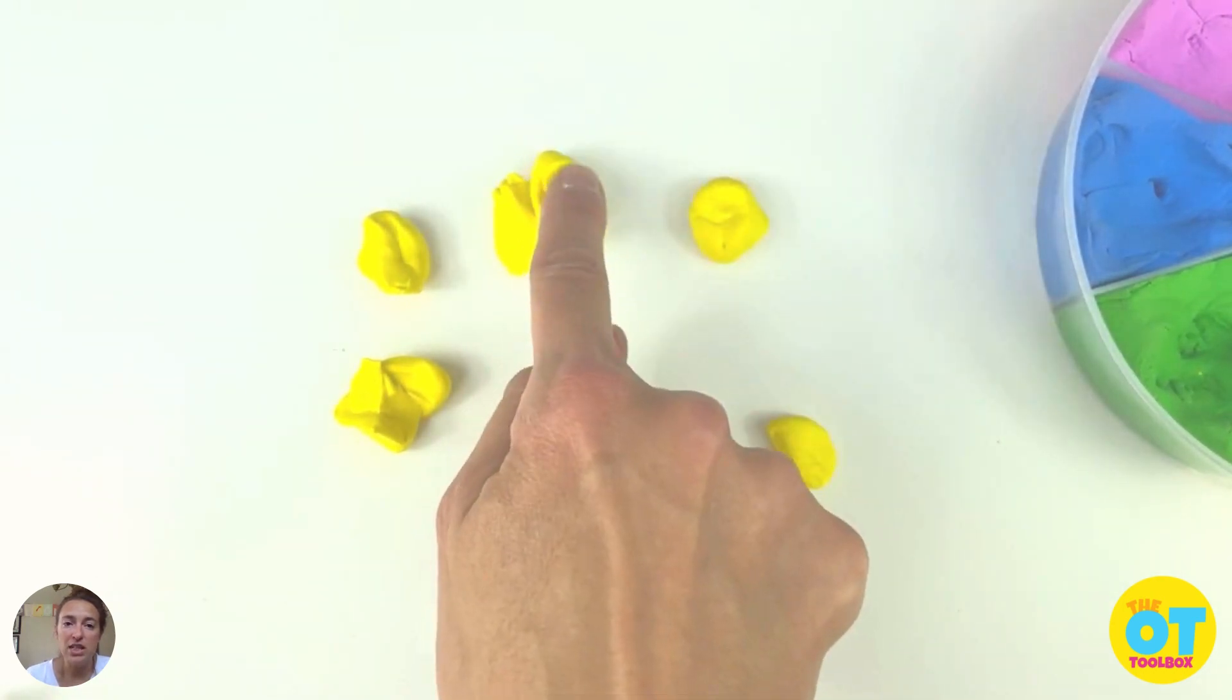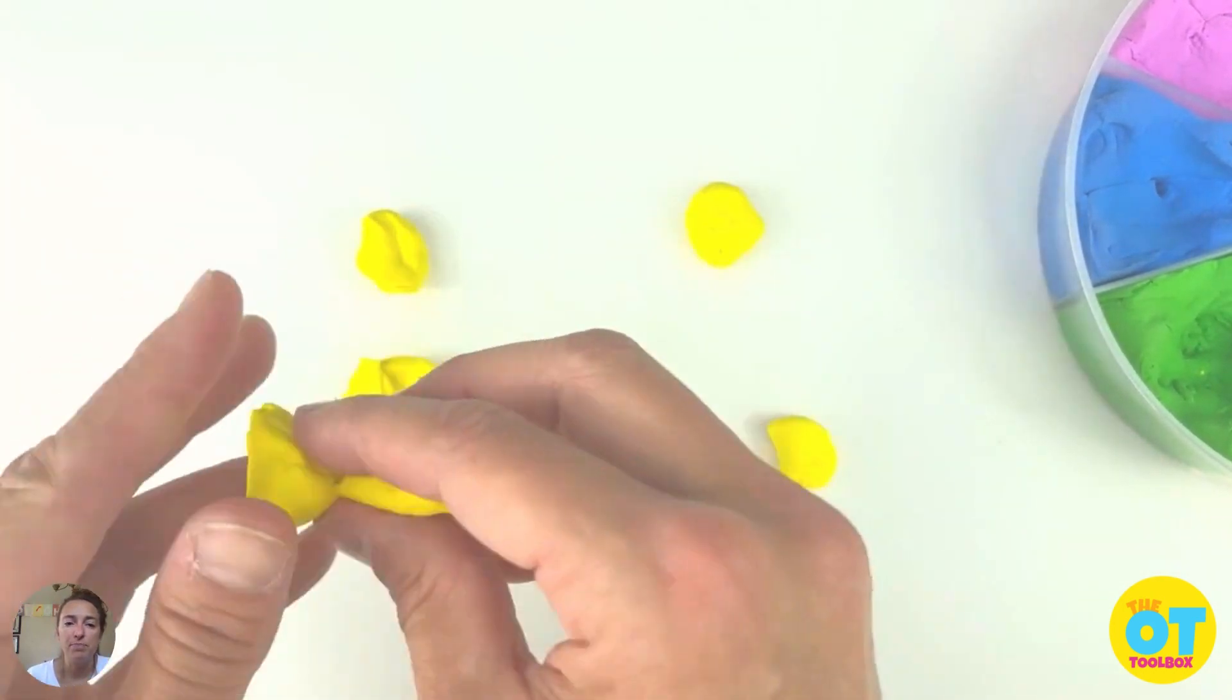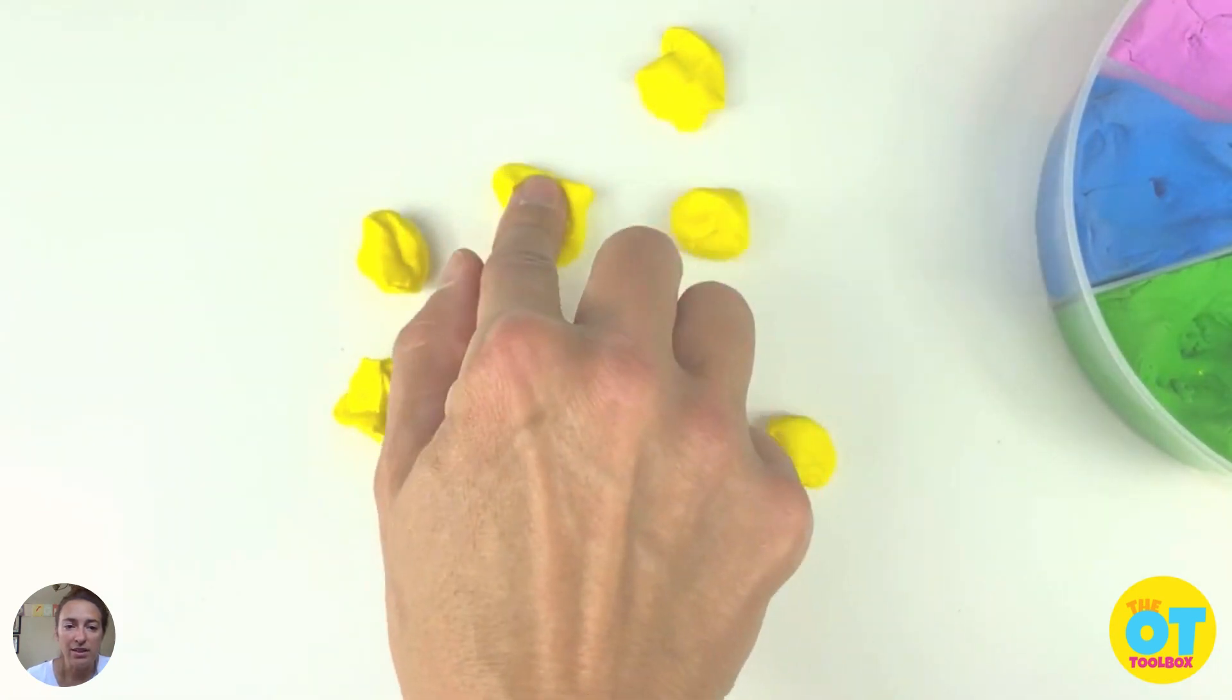Next, you're going to press each one of those little Play-Doh balls. Those ones got stuck together. That's okay.